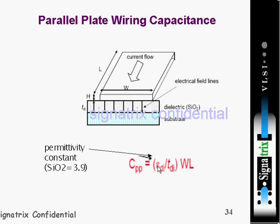Epsilon is the relative permittivity and tdi is the distance between the two plates of the capacitor. The permittivity constant uses a dielectric of silicon dioxide, and these are the electric field lines. This is a normal parallel plate capacitor.